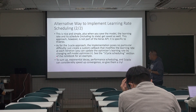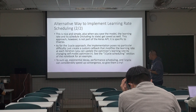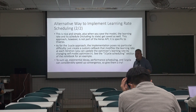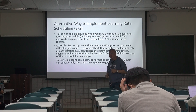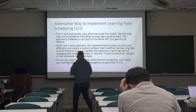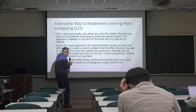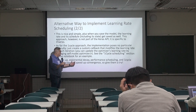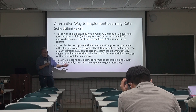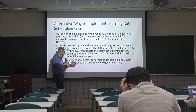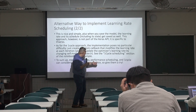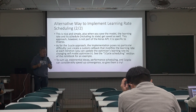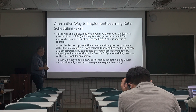To sum up: exponential decay, performance scheduling, and one cycle can considerably speed up convergence. One cycle scheduling is kind of complicated, while exponential and performance scheduling are easier. Exponential scheduling has an advantage in terms of convergence speed.